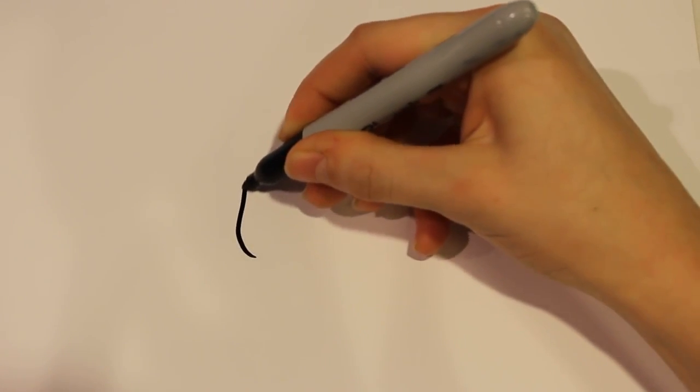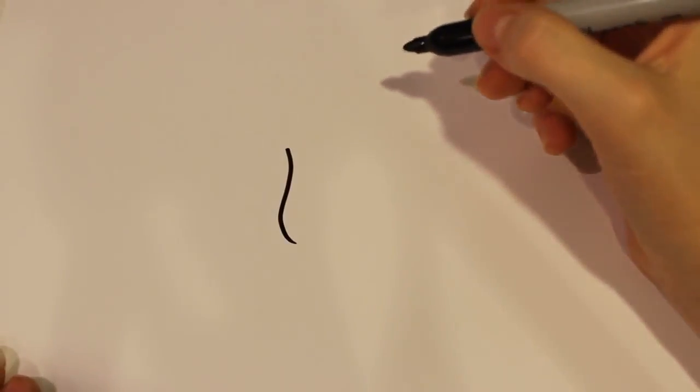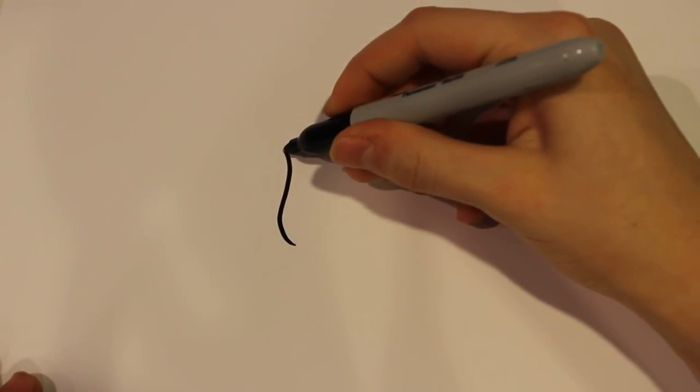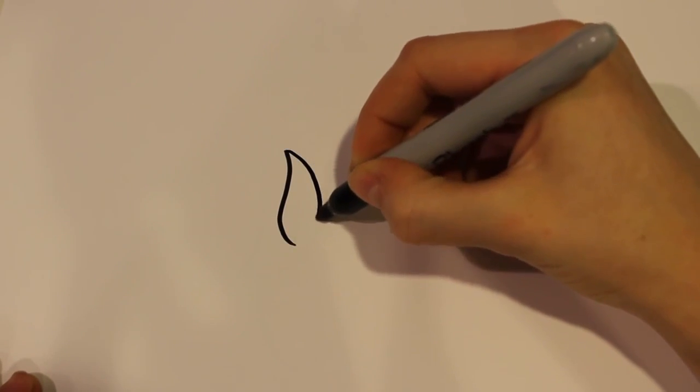First you start off by making a curved line that goes out and then goes right back in, kind of like a leaf shape.